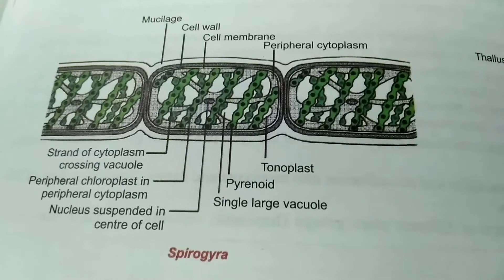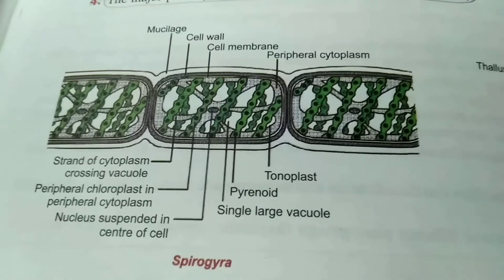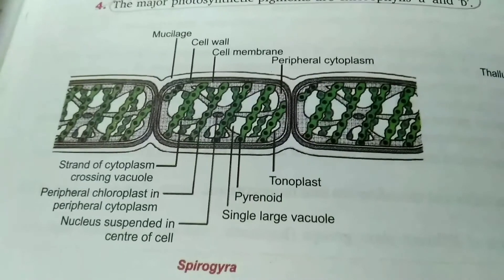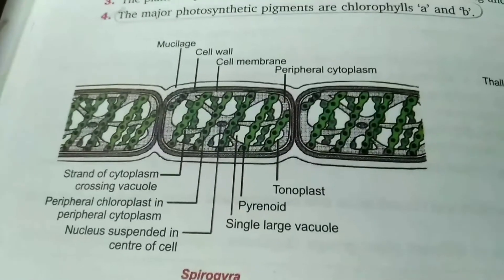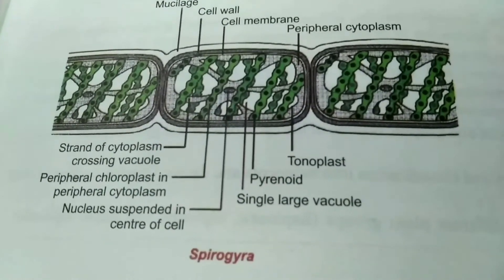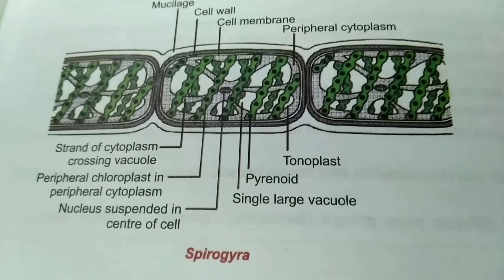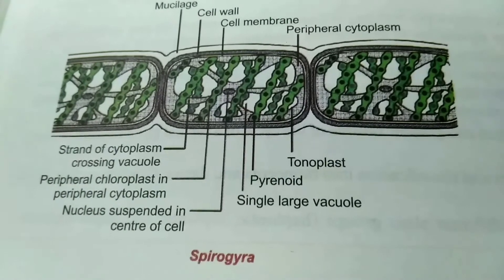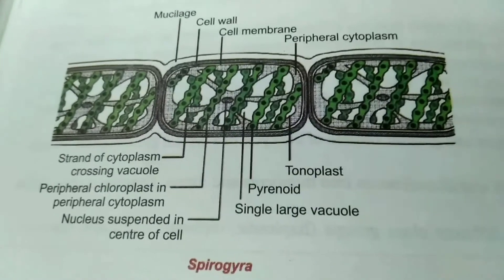Now the general classification of algae. Algae are divided into three major divisions: Chlorophyta, Phaeophyta, and Rhodophyta. Division Chlorophyta — green algae. An example is Spirogyra. You can see these thread-like structures; these are called pyrenoids. You can understand the pyrenoid structure — green color. This is Spirogyra.